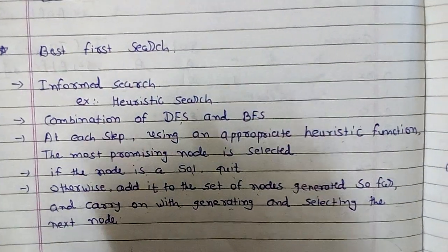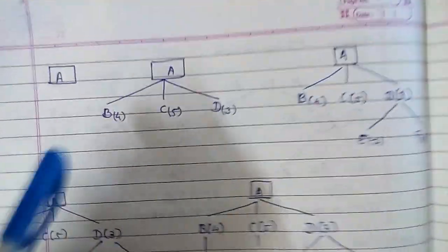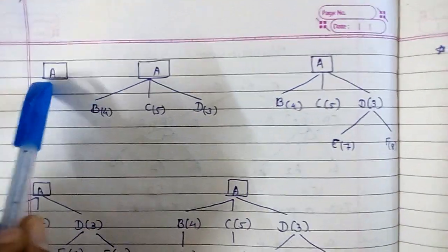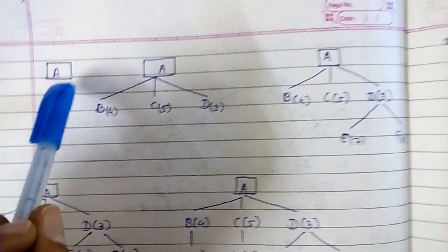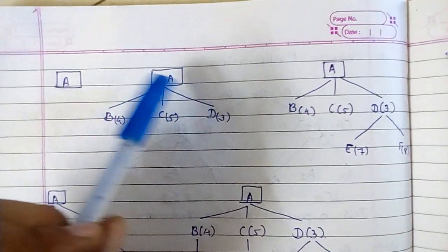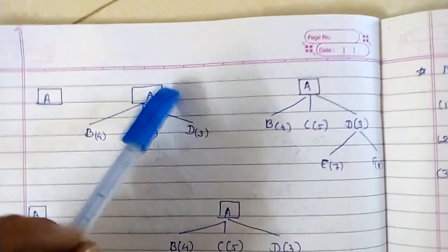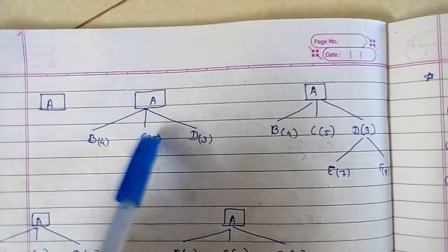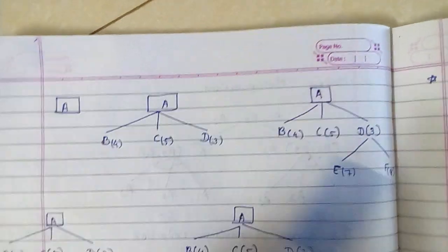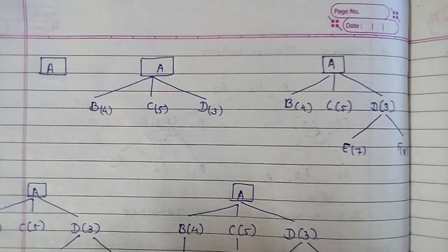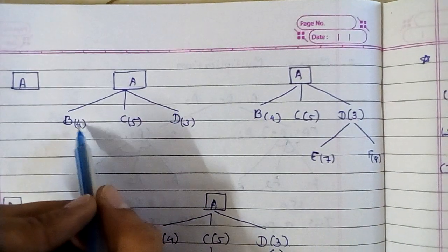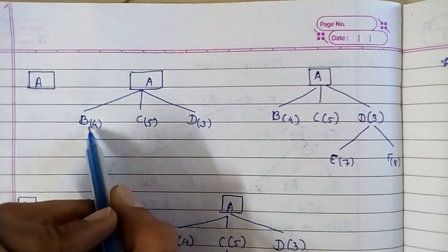Let's see an example, you will get a better idea. Here is the first node, that is A. Now generate all the possible child nodes of A. So here I'm generating B, C, and D.